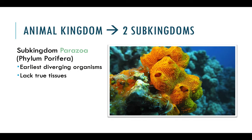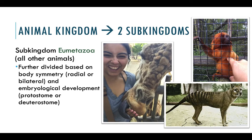The animal kingdom can be divided into two subkingdoms. The first one is Parazoa, which is exclusively the phylum Porifera. Remember: kingdom, phylum, class, order, family, genus, species — that is the order from most broad to most specific. So we're going to be dealing primarily with phyla names here. Under subkingdom Parazoa is Porifera, which are our sponges.